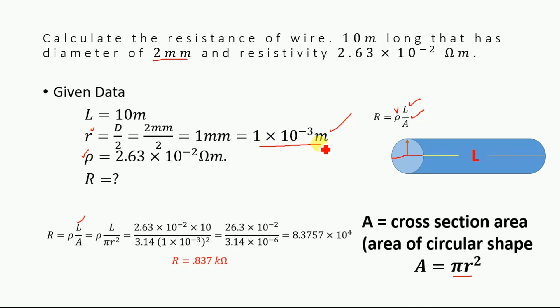By substituting all of these values in this equation—value for length, radius, pi (we know that pi is 3.14), and resistivity—and then solving, we will get the final result: R is equal to 0.837 kilo ohms. That's it. Thank you for watching and do not forget to subscribe for more videos.